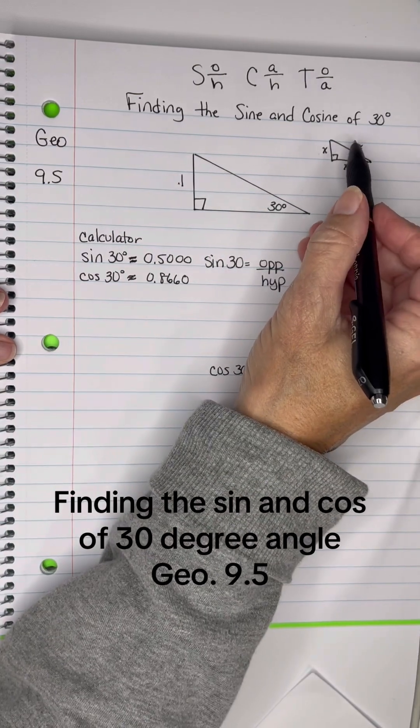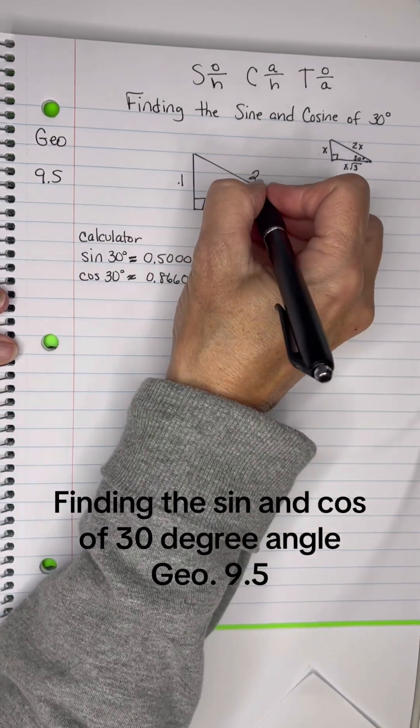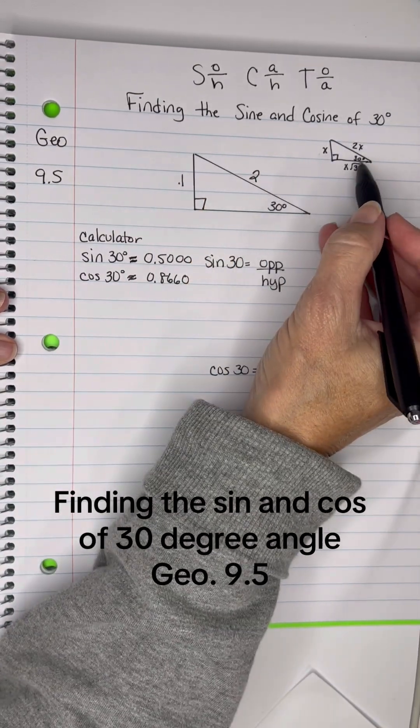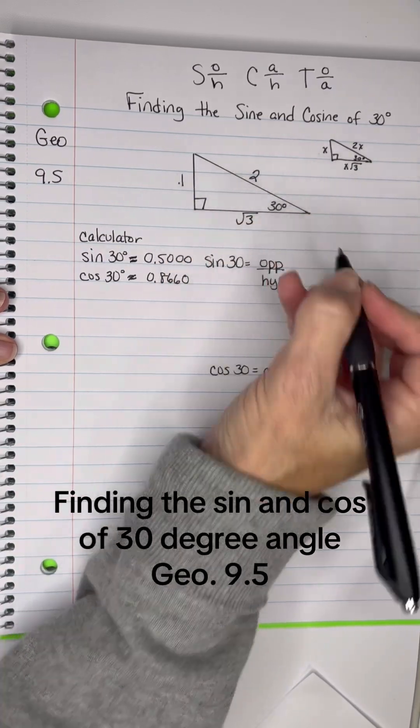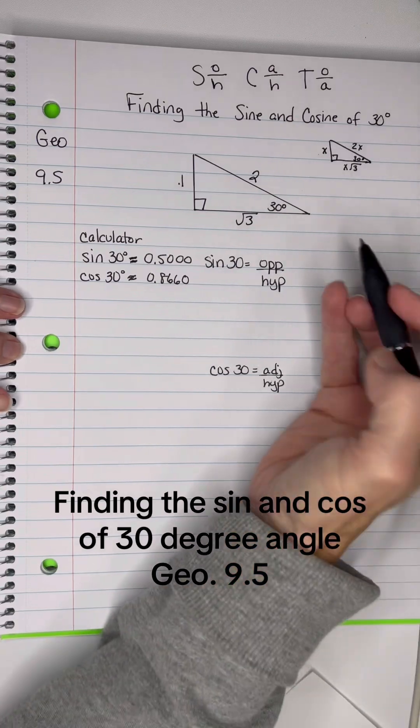Well, the hypotenuse would be 2 times the short leg, so that would be 2, and then the longer leg would be the short leg times root 3, 1 root 3, or just written as root 3, okay?